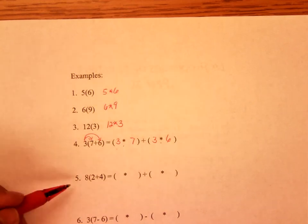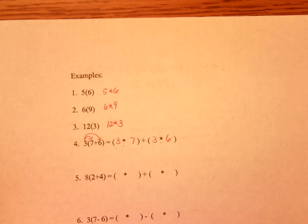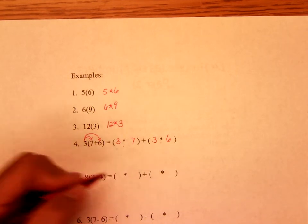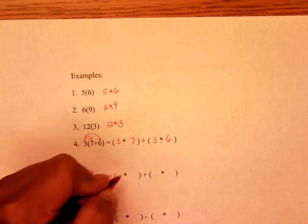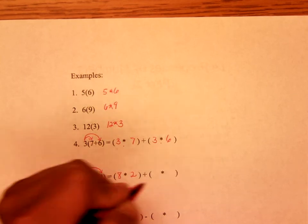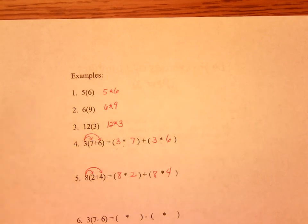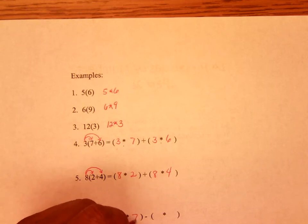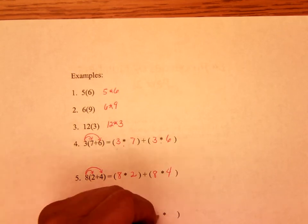Go ahead and do 5 and 6, and when you're ready, you can push play. So first parentheses, you should have written 8 times 2, and the second one, 8 times 4. With number 6, you should have written 3 times 7, minus 3 times 6.